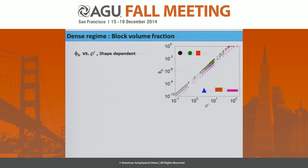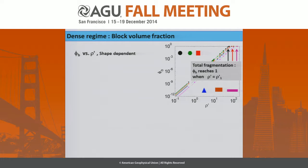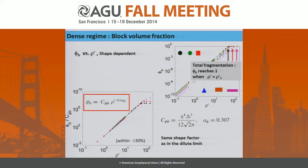We obtain phi_b as a function of rho-prime — the density — for four different fracture shapes, shown on a log-normal scale spanning three orders of magnitude. An interesting point: we reach total fragmentation — tessellation of space, phi_b reaches 1 — when rho-prime equals rho-prime-1. This quantity rho-prime-1 will play an important role later.